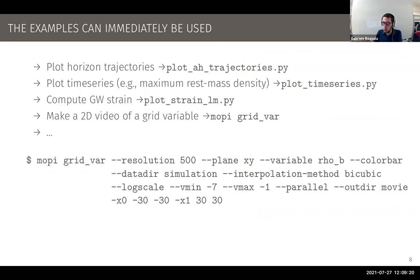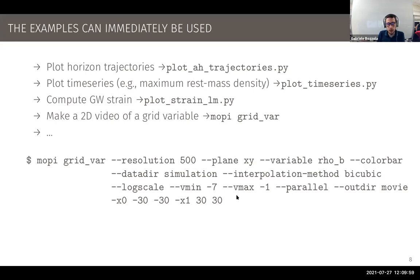For instance, if you ran the gallery simulation for binary black holes and want to plot trajectories, you can just use the example plot-horizon-trajectories. Or if you want to plot any time series, use plot-time-series. If you want to compute the gravitational wave strain, or make a 2D video of a variable, there's already a lot of examples for common tasks in numerical relativity. These examples are highly configurable via command line — you can call a script with many options and get a quick result without opening any text editor.